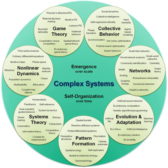Systems biology is a movement that draws on several trends in bioscience research. Proponents describe systems biology as a biology-based interdisciplinary study field that focuses on complex interactions in biological systems, claiming that it uses a new perspective — holism instead of reduction — particularly from the year 2000 onwards. An often stated ambition of systems biology is the modeling and discovery of emergent properties. It is thought that Ludwig von Bertalanffy may have created the term systems biology in 1928.